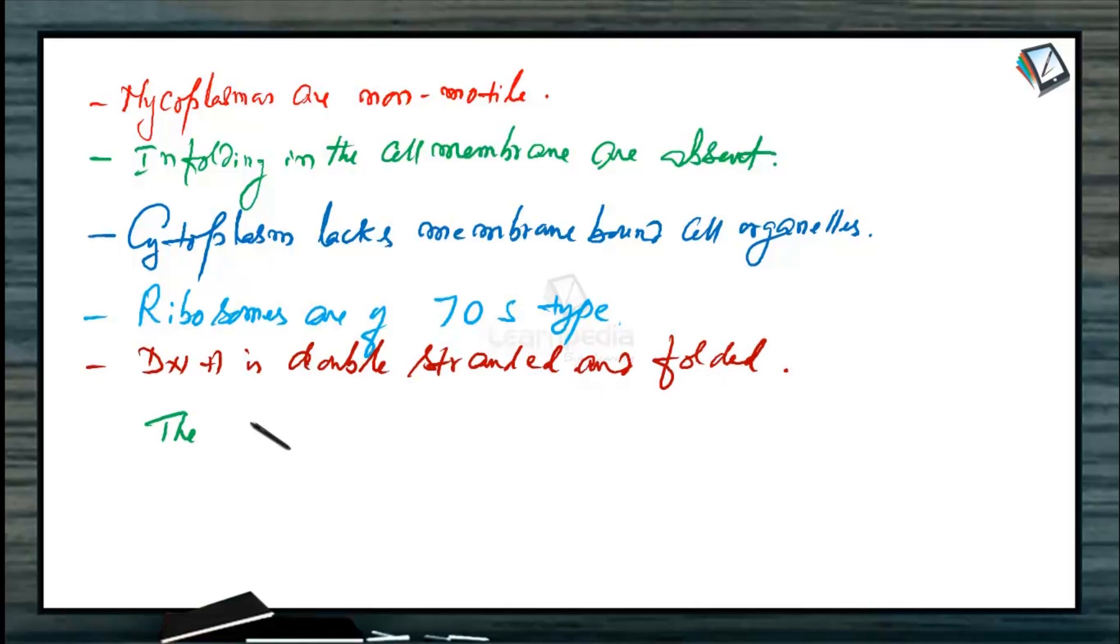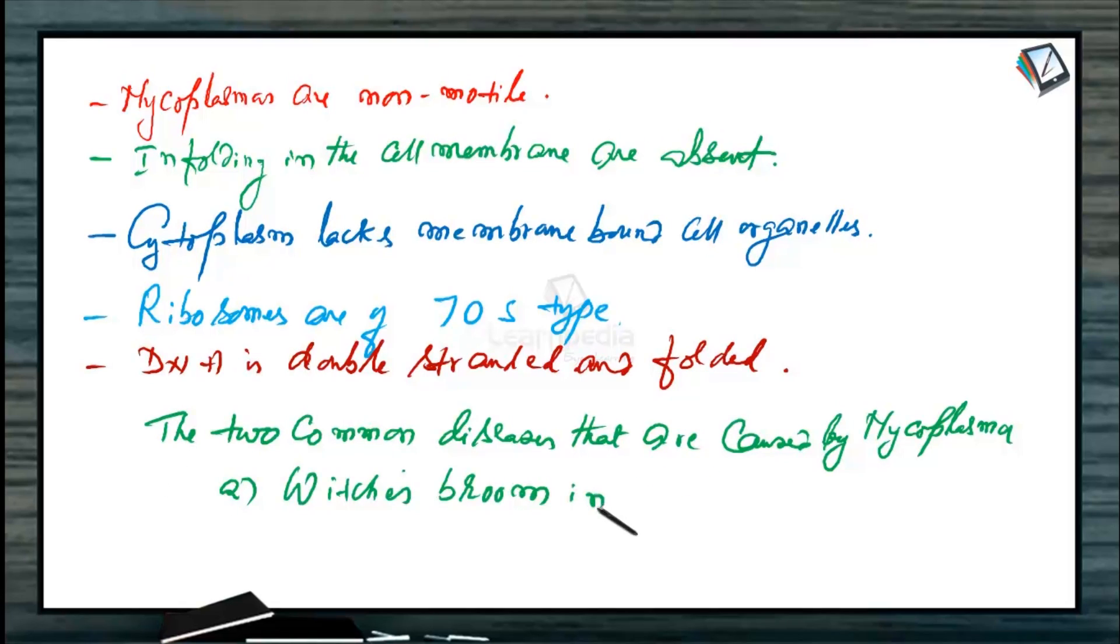The two common diseases that are caused by mycoplasma are witch's broom in plants and pleuropneumonia in animals.